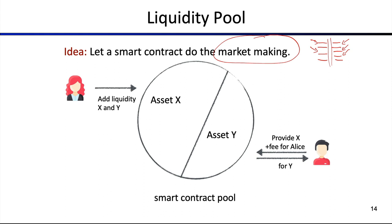Here we have Alice, a rich and wealthy actor, adding liquidity X and Y into the smart contract pool. Then we have Bob, the nifty trader. He wants to exchange X for Y, and because he likes the service he's using, he also pays a fee to Alice. This makes Alice happy, as she earns interest on her assets in that regard. That's the very basic idea.